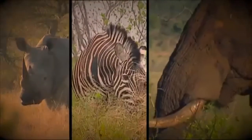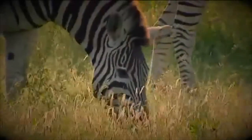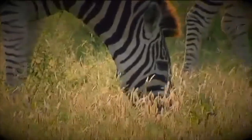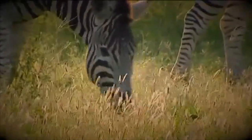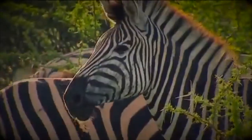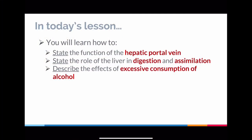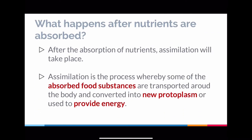The digestive systems of non-ruminants work differently to ruminants. They can't extract every bit of energy by chewing and re-chewing, but they can get the energy released more quickly. In this lesson, we're going to learn about what I call the hepatic portal vein, talk about the process of assimilation, and at the end discuss some of the problems that come with excessive consumption of alcohol.